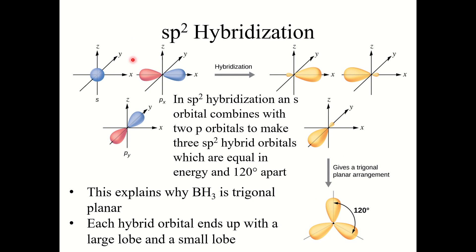When we take the s orbital and hybridize it with those two 2p orbitals, we get three sp² hybrid orbitals. When these three orbitals are overlaid on the same image, this looks very much like the trigonal planar arrangement, with 120 degrees between the bonds. This explains why BH₃ is trigonal planar.